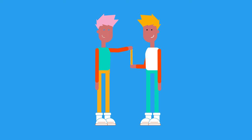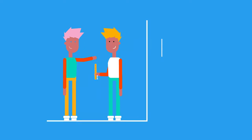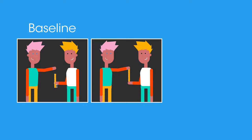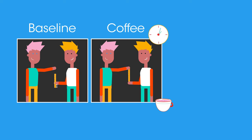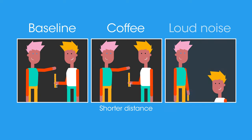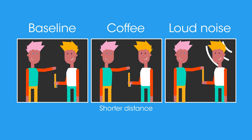The experiment would be done when the subject is in a calm setting with no distractions. This gives us a baseline result. Now either give the person a strong caffeine drink like unsweetened coffee and wait a few minutes before beginning the test, or provide a distraction such as a loud noise or a TV.